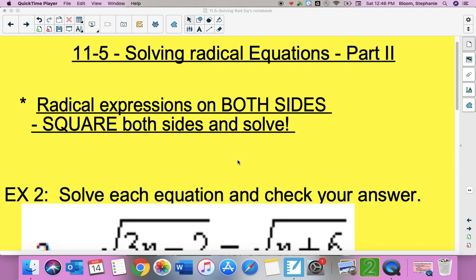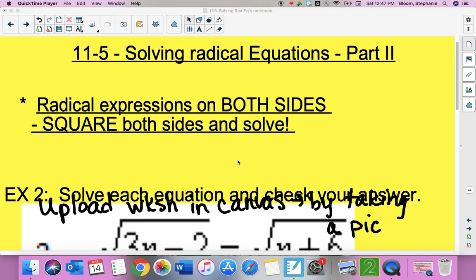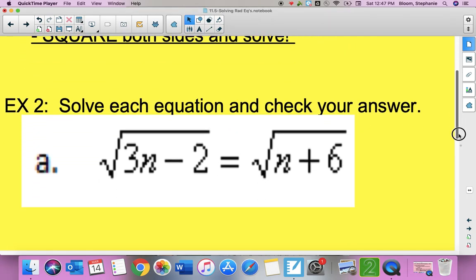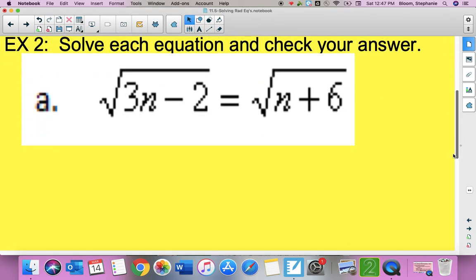11.5 part 2 is still solving radical equations, only what you're going to notice today is that we're going to have radicals on both sides of the equations. We just want to get rid of those radicals. That's the only difference in what we're doing today. Whereas yesterday we only had a radical on one side or the other.